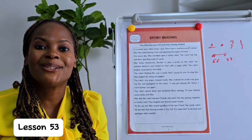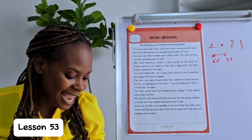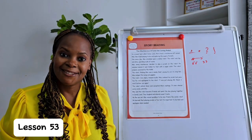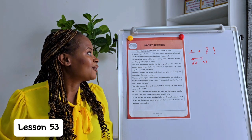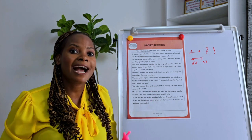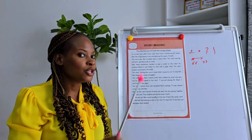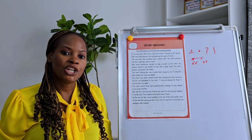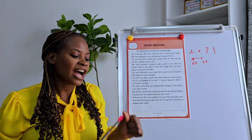Hi my friend, welcome back to our story reading class with Mr. Nita. I am so happy to have you here today. In today's lesson we are going to read again the story called 'The Mischievous Elf and the Candy Robot.' After that we are going to do comprehension activities about this story, which includes drawing a detailed picture.